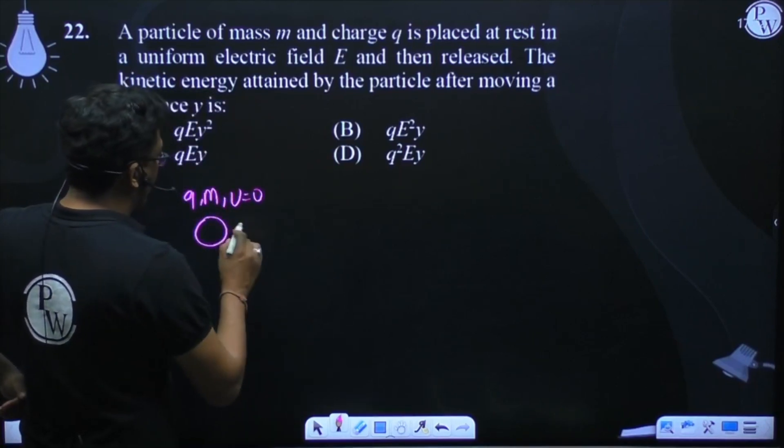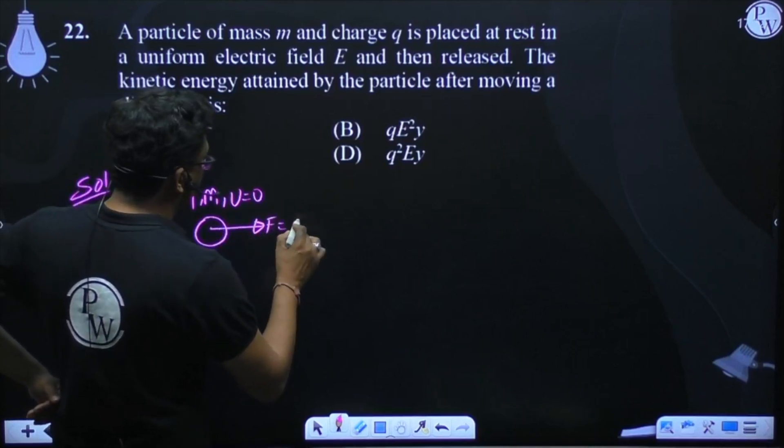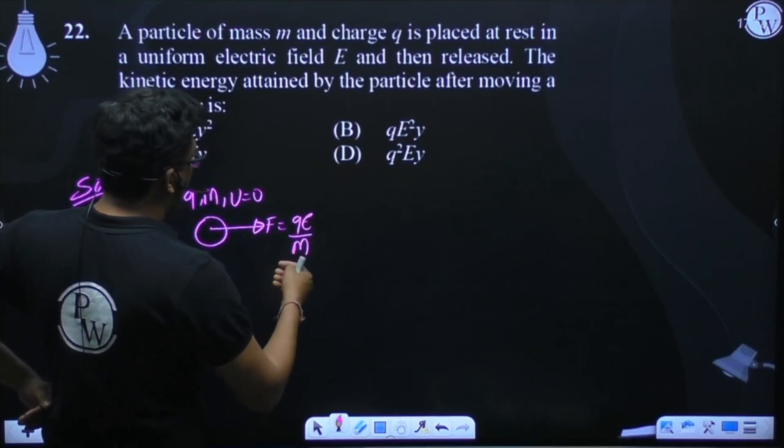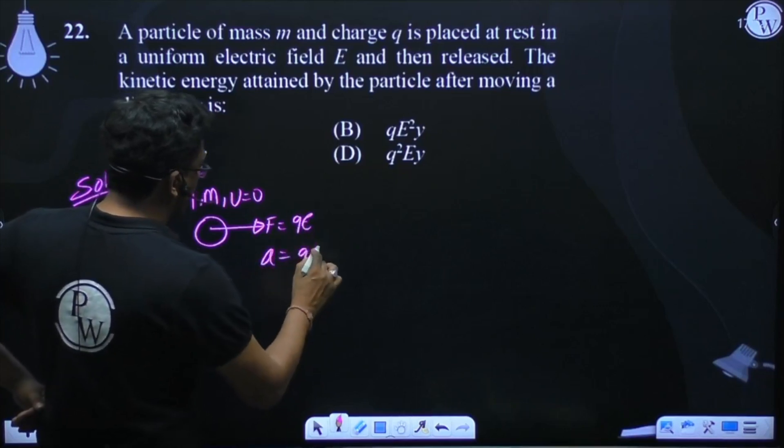So initial velocity U is zero. And there will be an acceleration QE by M.